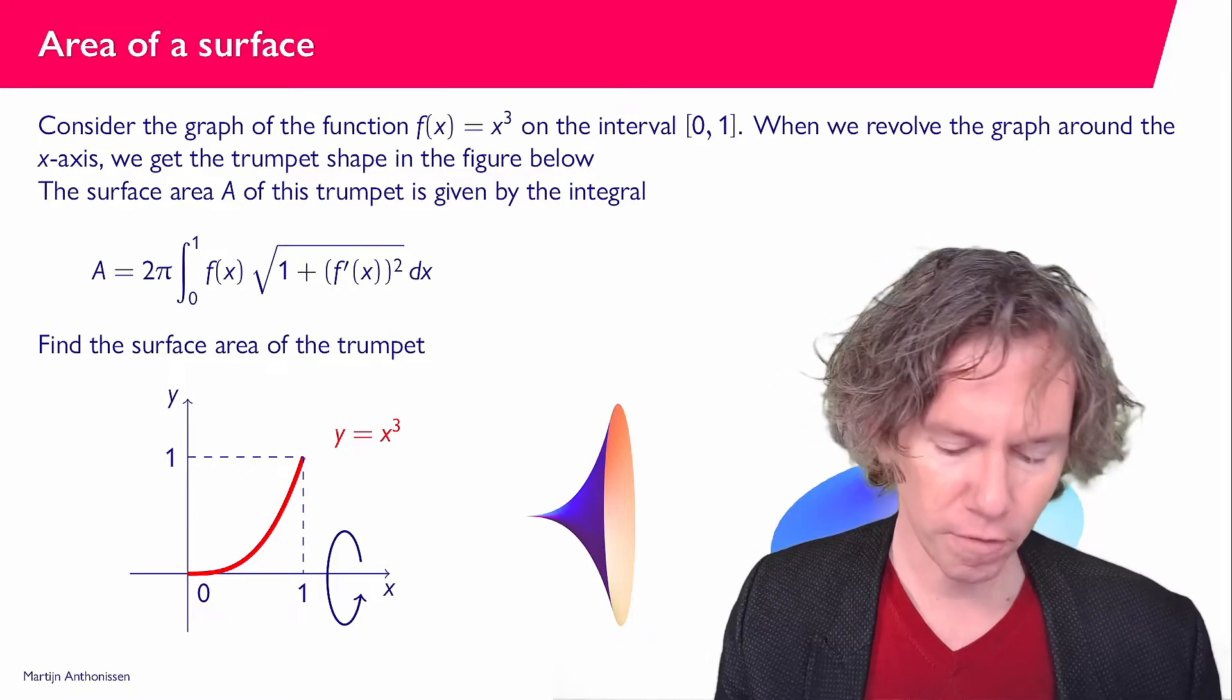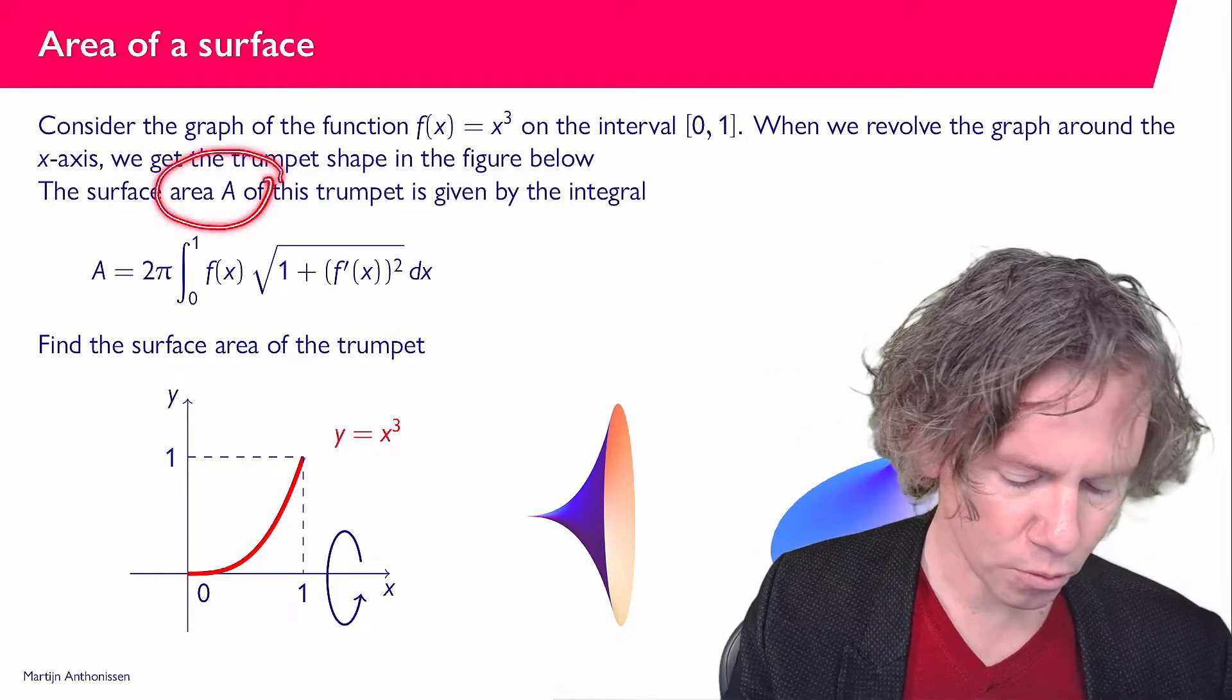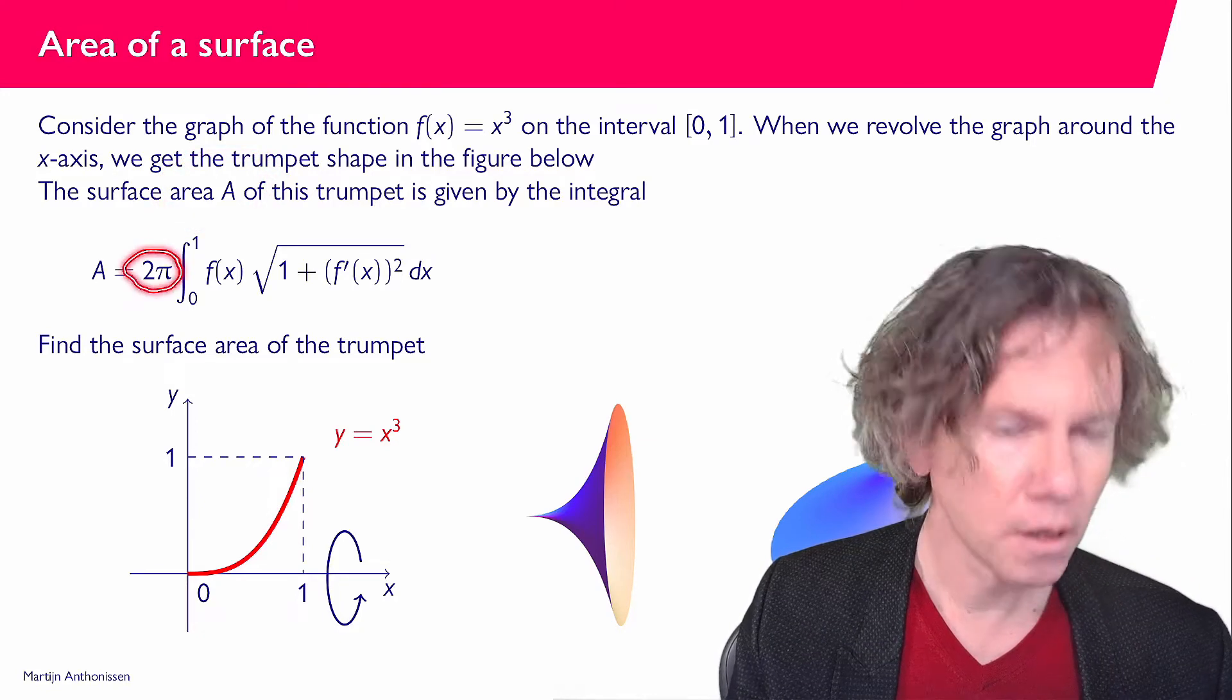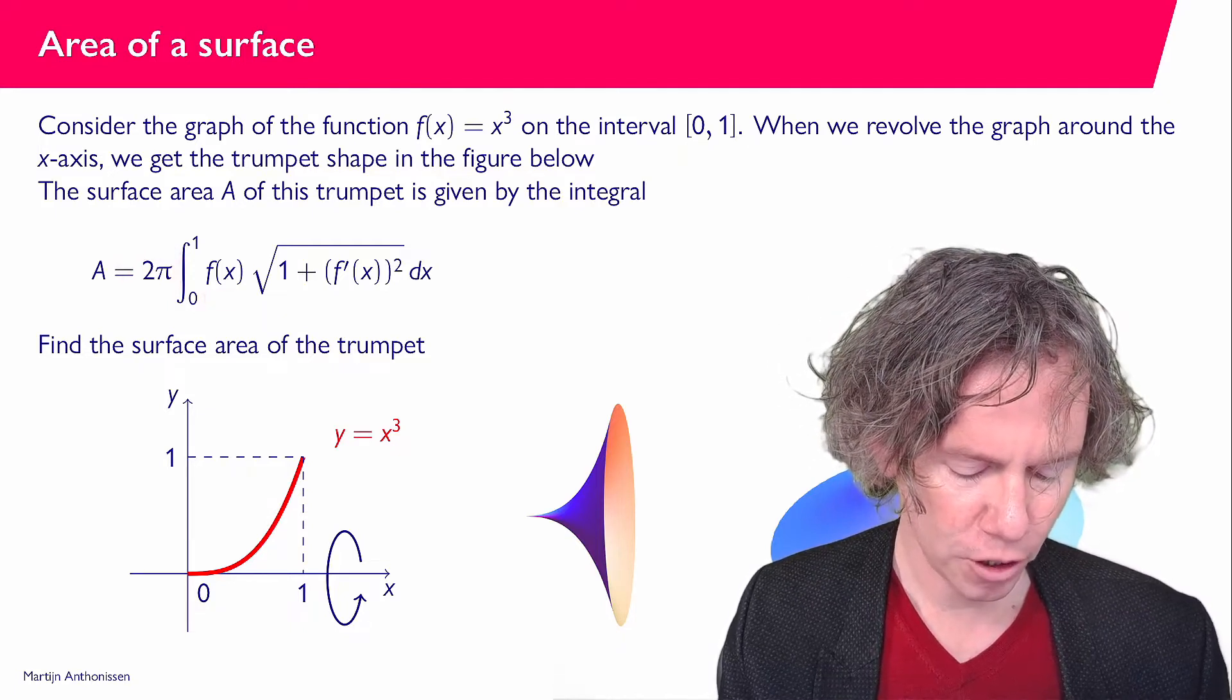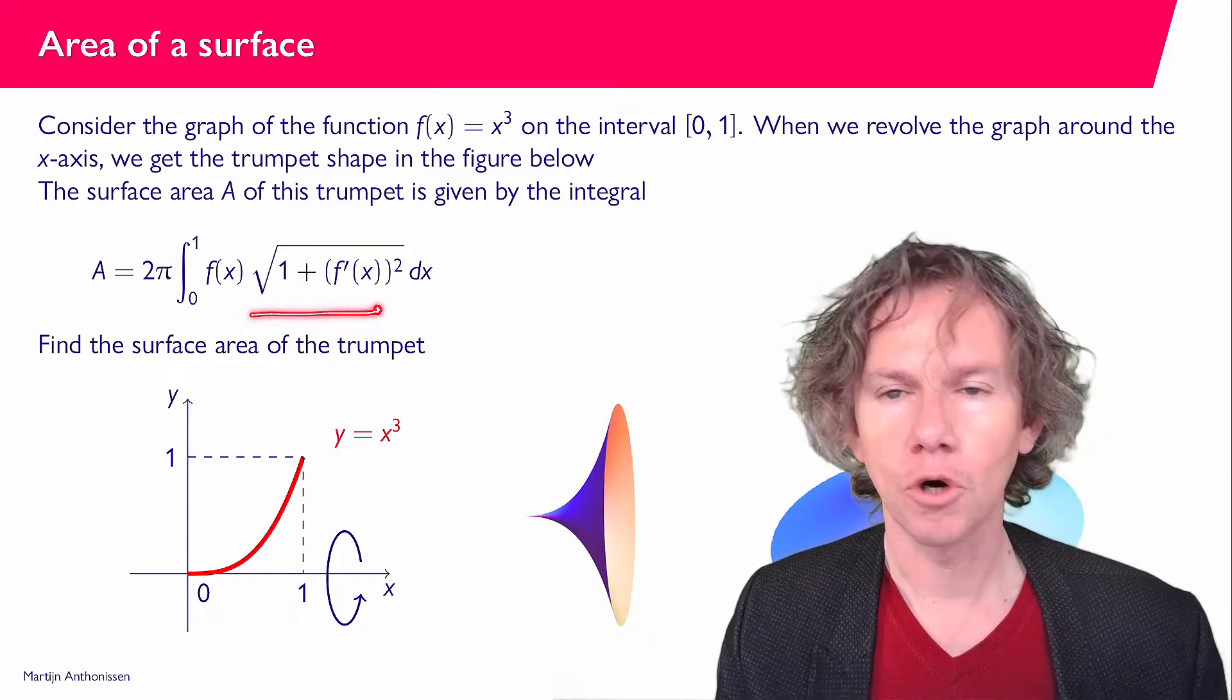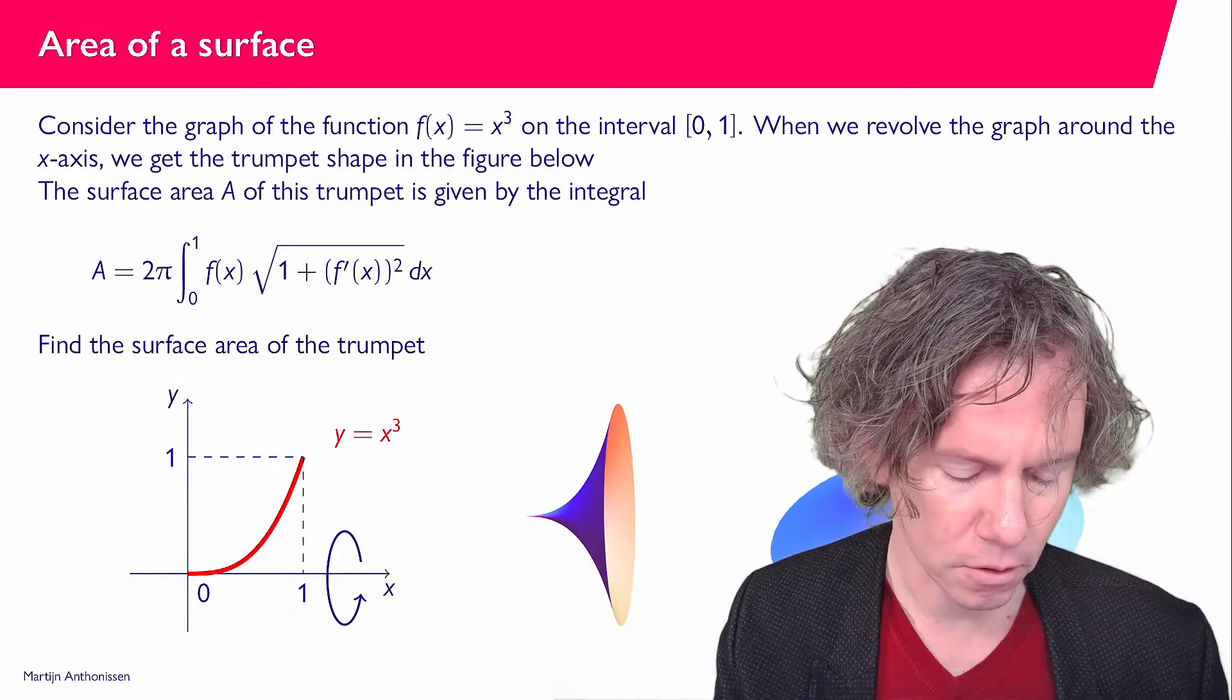So let's see. Given is this equation here. So the surface area A, that's what we would like to compute, is 2π times the integral from 0 to 1, and then we have f times the square root of 1 plus f prime squared dx. So we have to compute this integral.